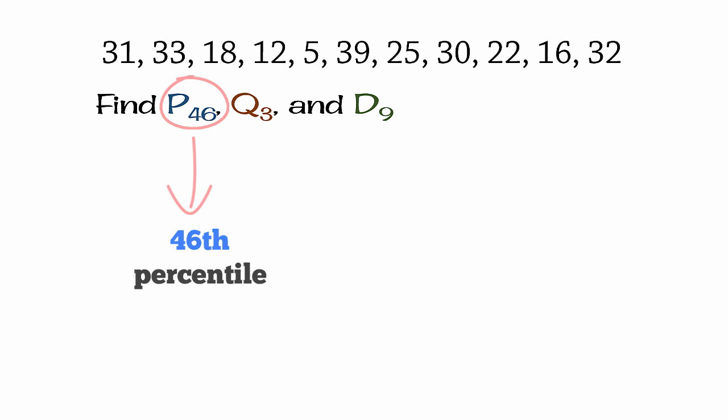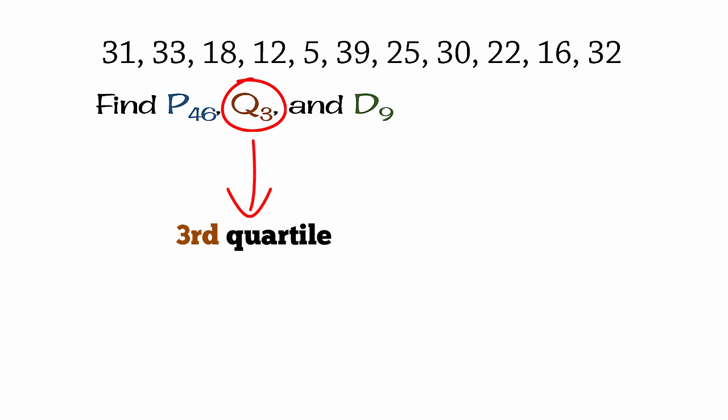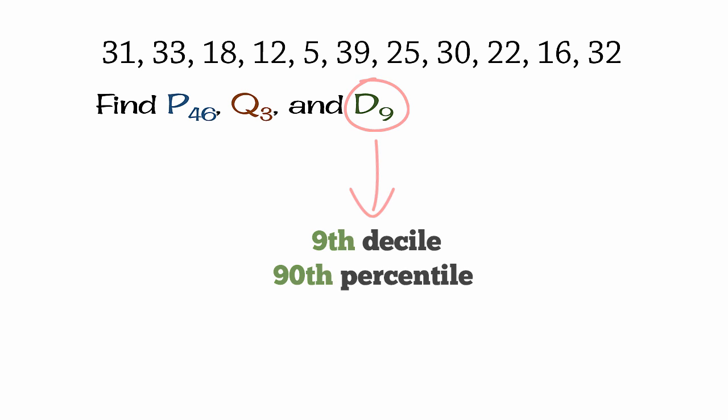Suppose we are given this data representing scores on an exam. We want to find P46 or the 46th percentile, Q3 or the third quartile (the 75th percentile), and D9, the ninth decile or the 90th percentile.